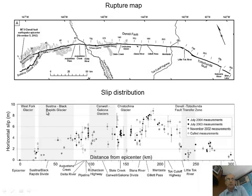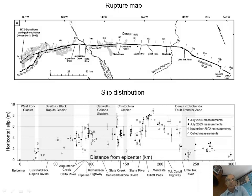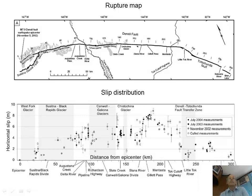Here is the slip distribution: distance in kilometers versus horizontal slip. They went to many sites and measured the offset of features with distance. What you can see is it's not symmetric — it has a slow increase, some drops, and then a peak of 8 meters, and then comes down pretty fast. Where the rupture jumped from the Denali fault to the Totunda fault, there was a pretty abrupt decrease in slip — down to only 2 meters on Totunda, whereas nearby on Denali itself it was as many as 8.